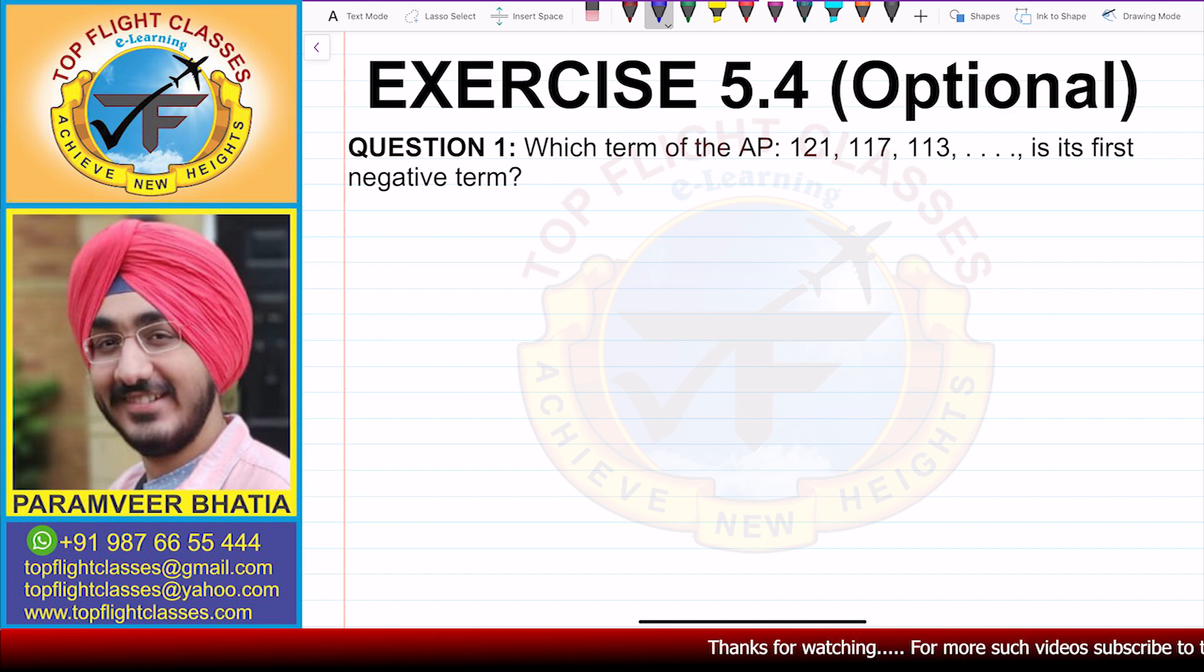Question number 1 says: Which term of the AP is its first negative term? In this case, the AP given is 121, 117, 113, and so on.